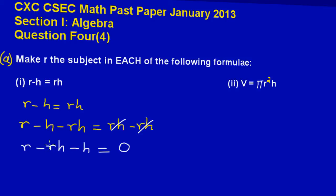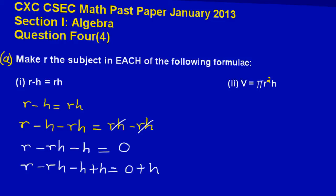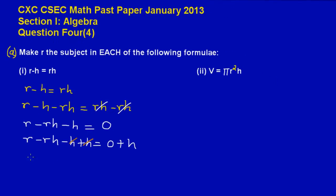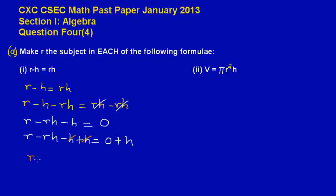Now I just need the R's to be on this side. If you notice I have a negative H standing by itself. To move this negative H to the right side I have to do the opposite of subtraction, which is addition. So I am going to add H to both sides. I have minus H, so adding H to both sides gives zero plus H on the right. The negative H and positive H cancel out leaving zero, so what we have left is R minus RH equal to H.